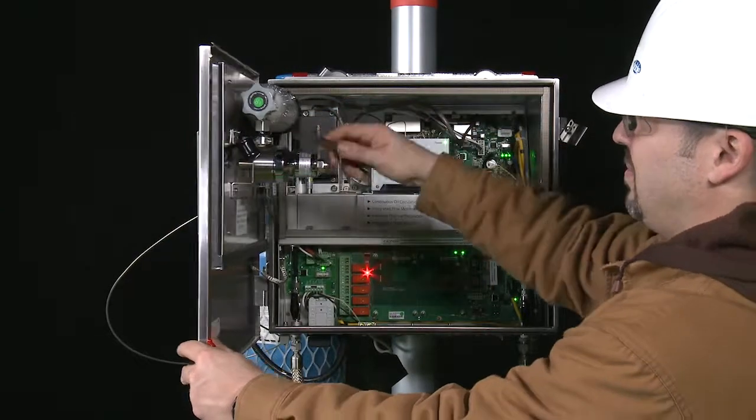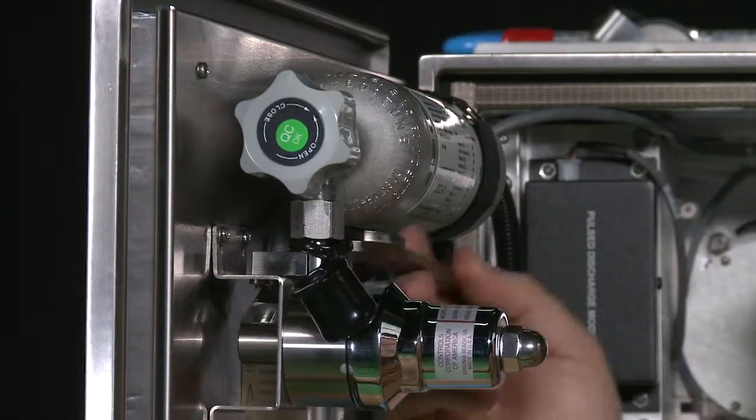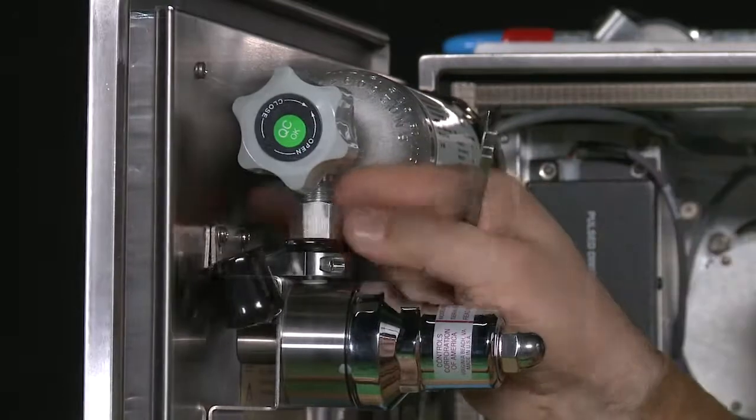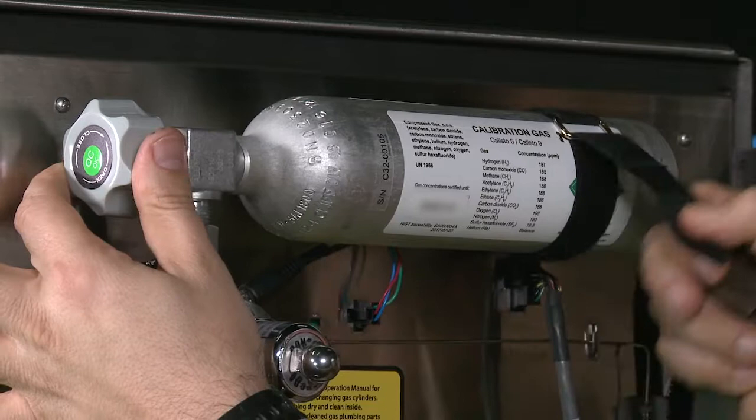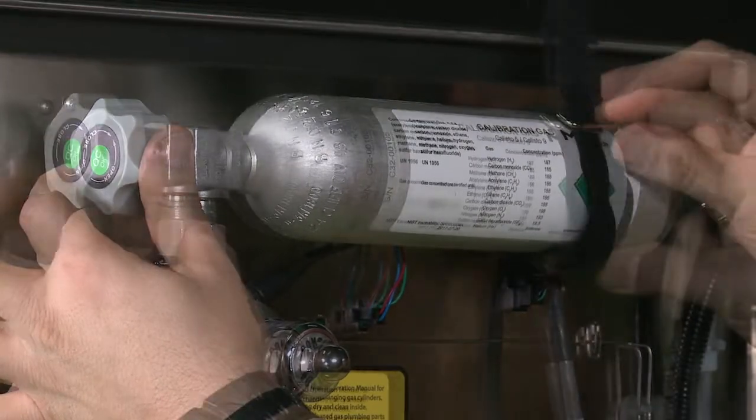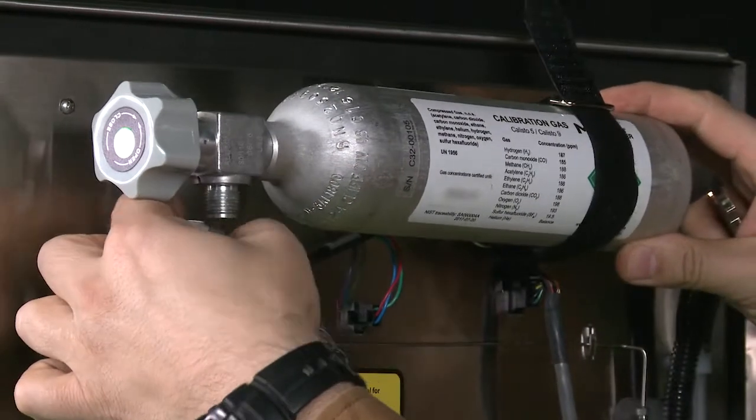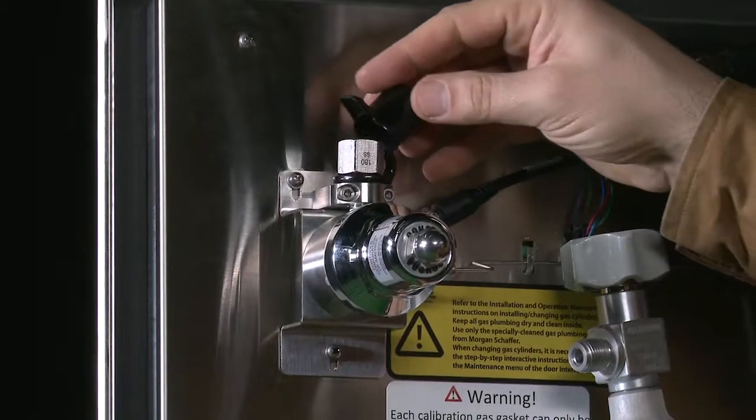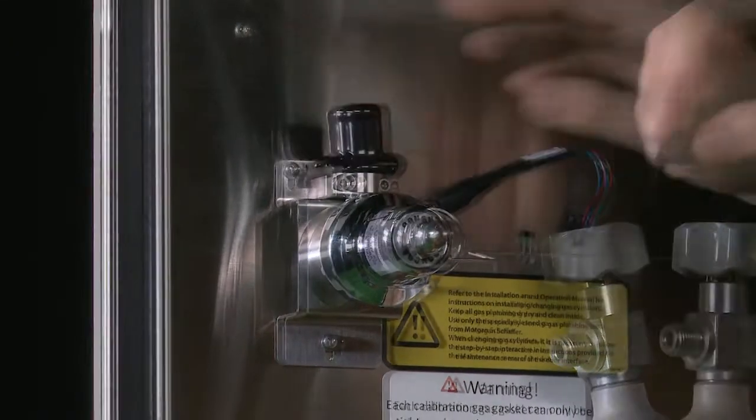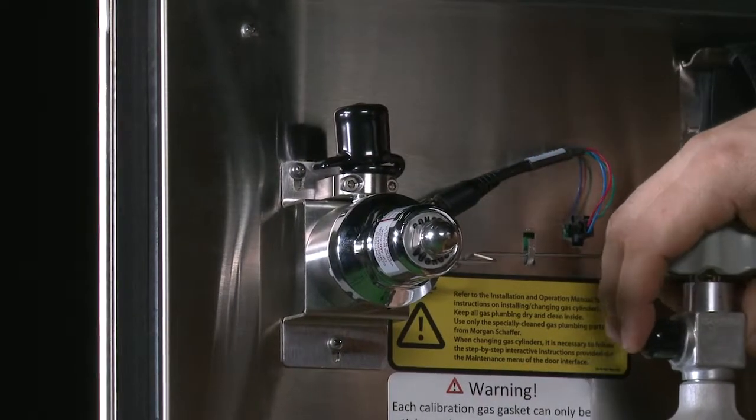Disconnect the fitting from the old cylinder using the wrench provided. Undo the strap holding the cylinder in place and remove the empty cylinder. Protect both the calibration gas cylinder and the regulator with clean protective caps.